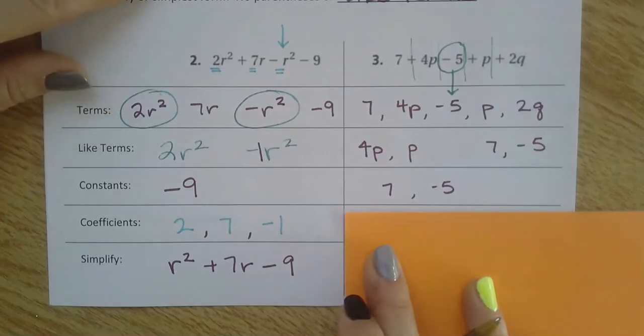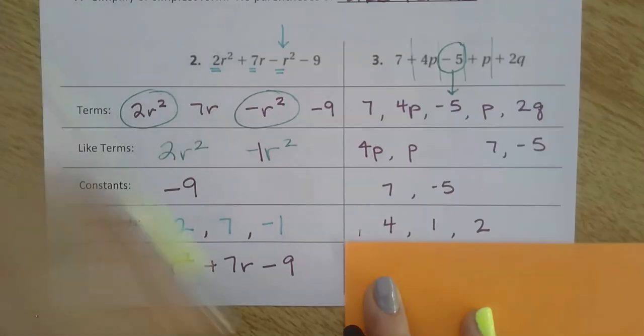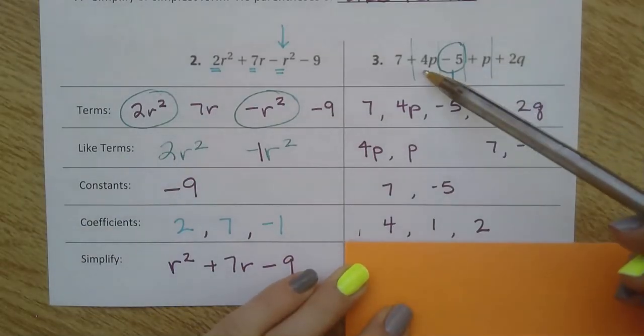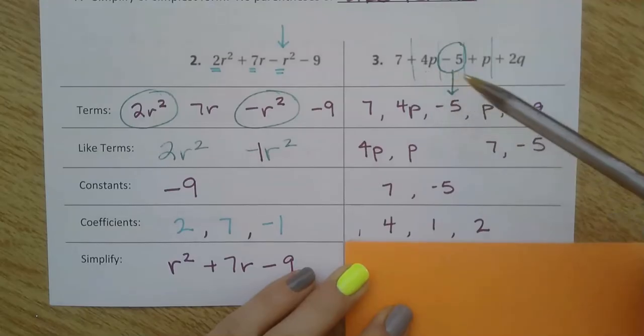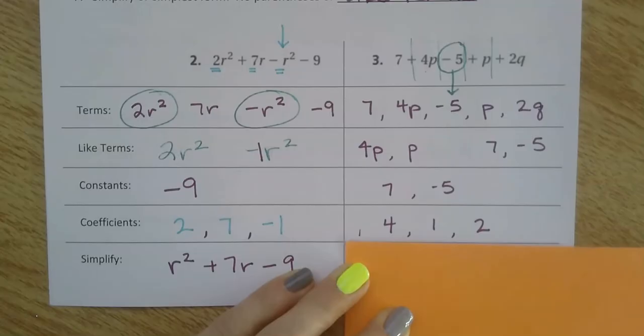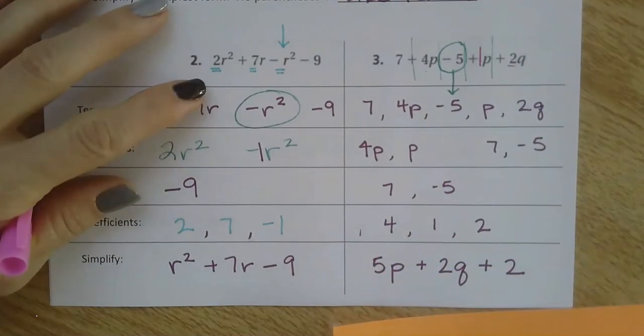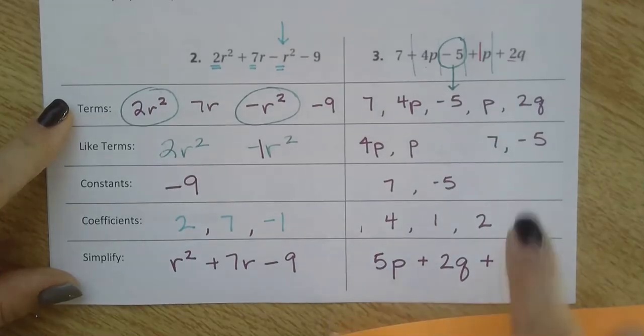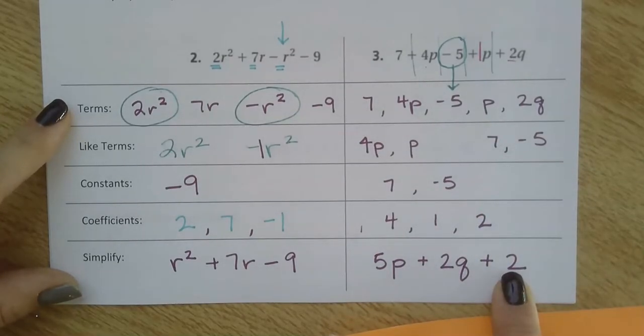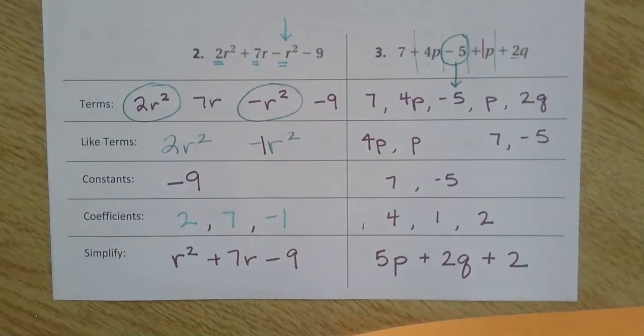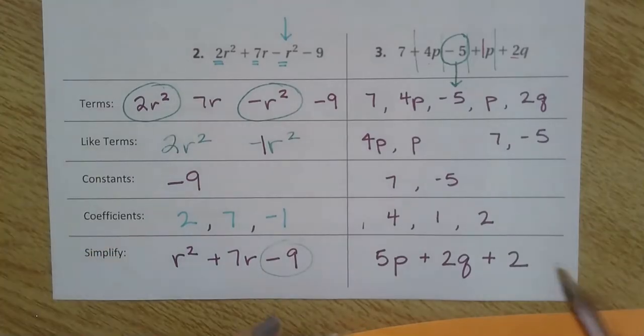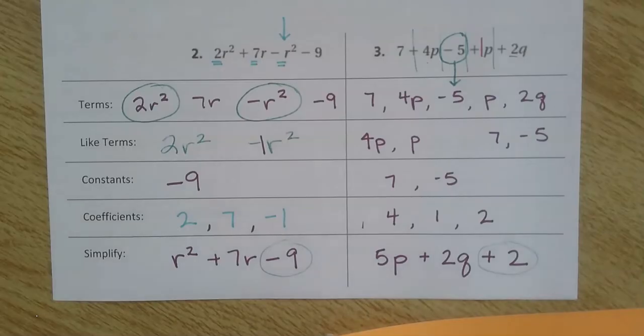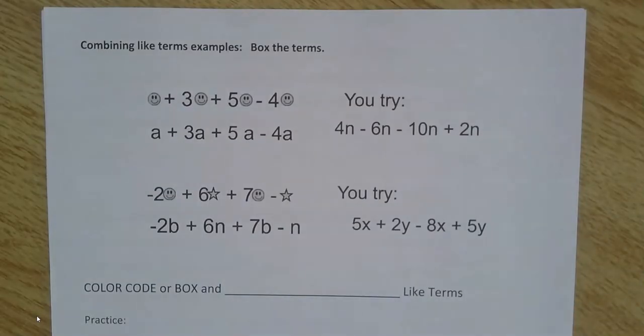Constants - my plain numbers by themselves. Coefficients - numbers in front of the variables. Every variable has a coefficient: there's a 4 in front of this p, there's an invisible 1 again, always an invisible 1 if there's no number there, and there's a 2 in front of the q. Then I put my like terms together: 4p and one more makes 5p, 7 and negative 5 makes 2. The q is just by itself. We try to put the constant, the plain number by itself, at the end when we simplify it.